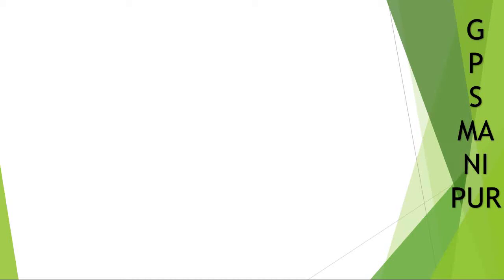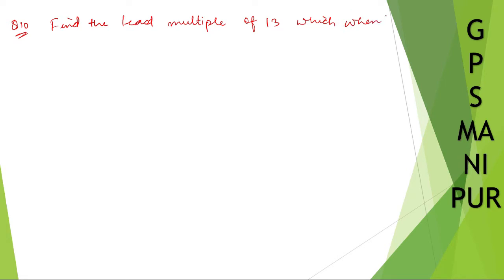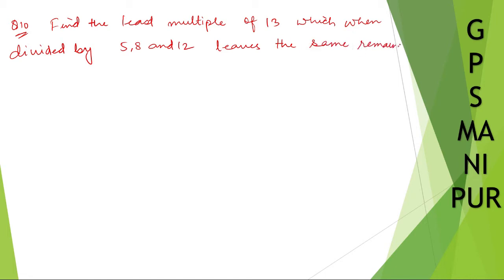Now we are doing question number 10, exercise 1.2. The question says: find the least multiple of 13 which when divided by 5, 8, and 12 leaves the same remainder 2 in each case.